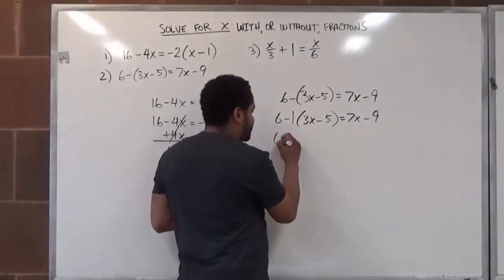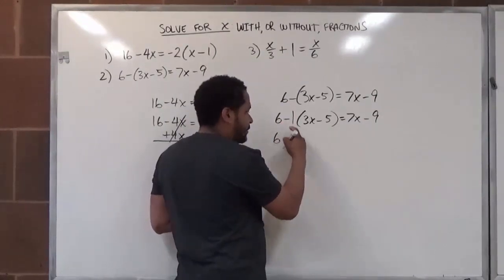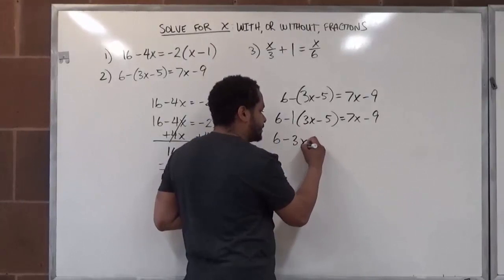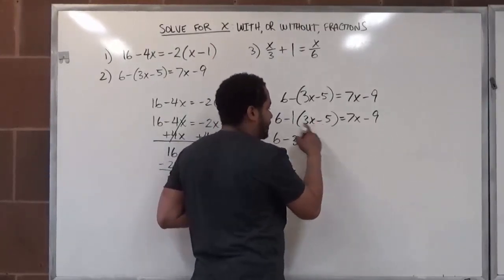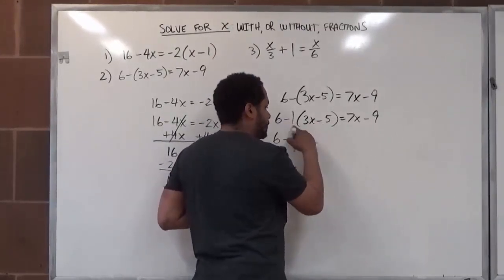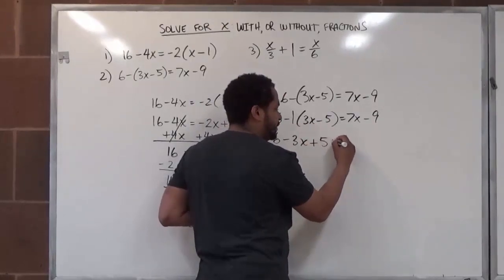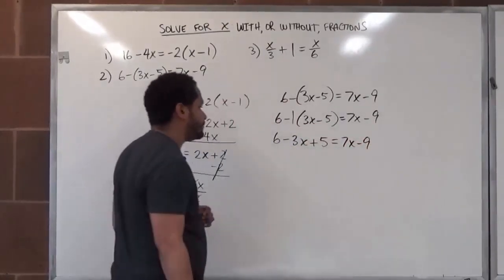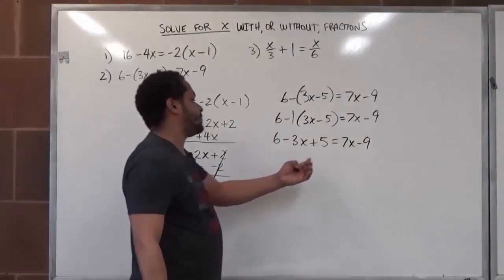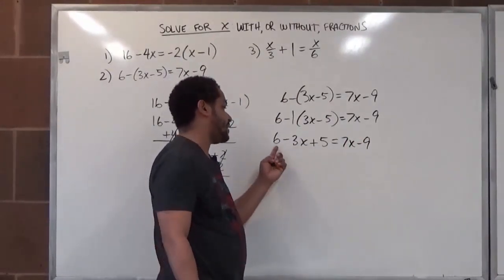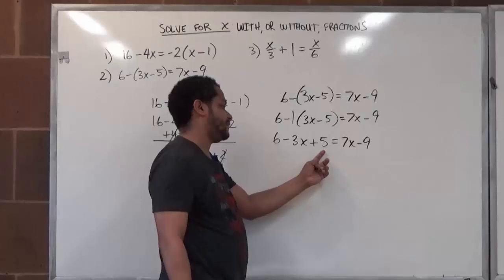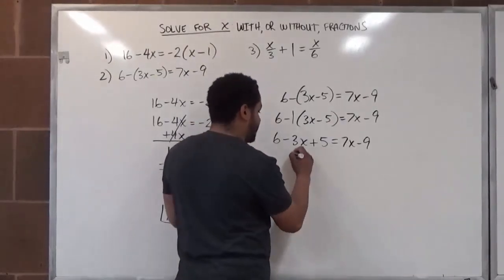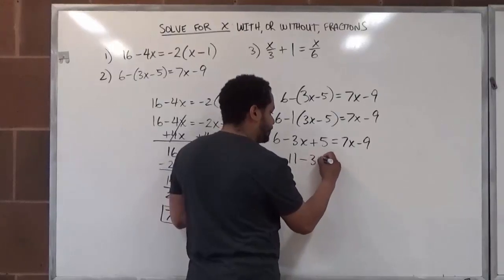So here we have six comes down, and we have negative one times three x's which gives us negative three x's. A negative one times a negative five — negative by negative is positive — one by five is just five. The rest of everything comes down. Now on the left hand side we have like terms: a positive six and a positive five, and we're just going to add these together. Six plus five is eleven, and we still have negative three x's.